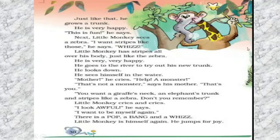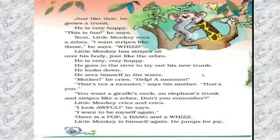Now the little monkey decided to go to the river and try using his trunk. So the little monkey went to the river. He sees himself in the water — yeh little monkey apne aap ko paani mein dekhta hai. What does he see? He cries to his mother — 'help, a monster!' Monster means a huge, horrible, scary animal. So the little monkey sees himself in the water and thinks he looks like a monster.